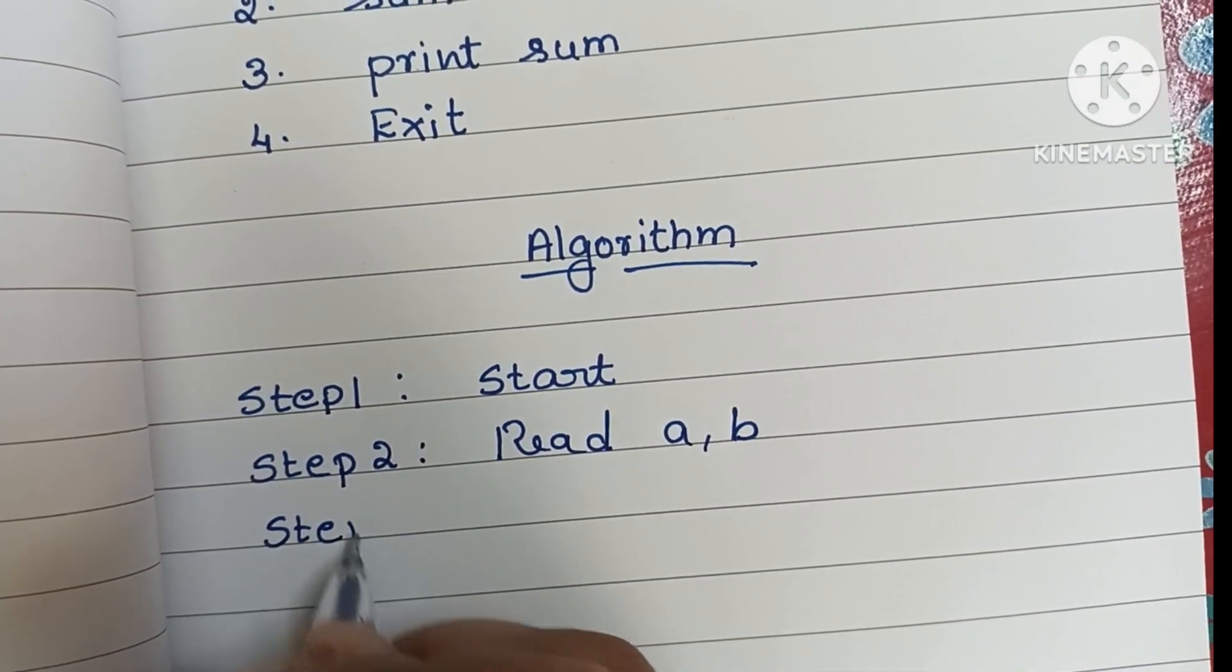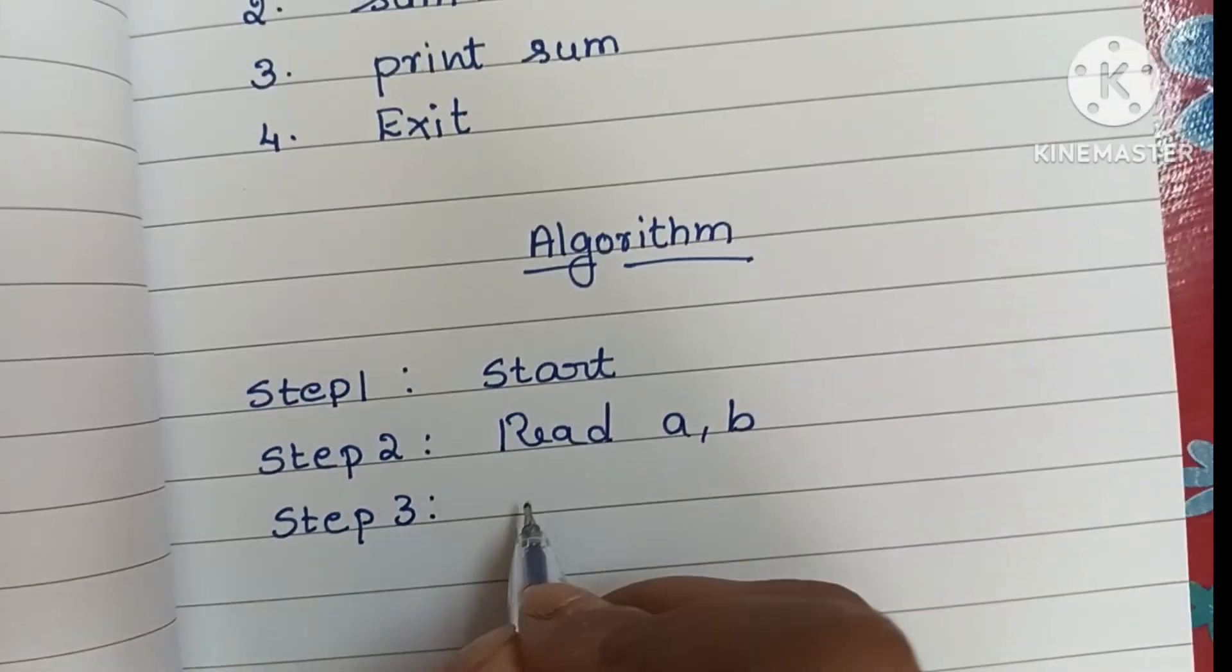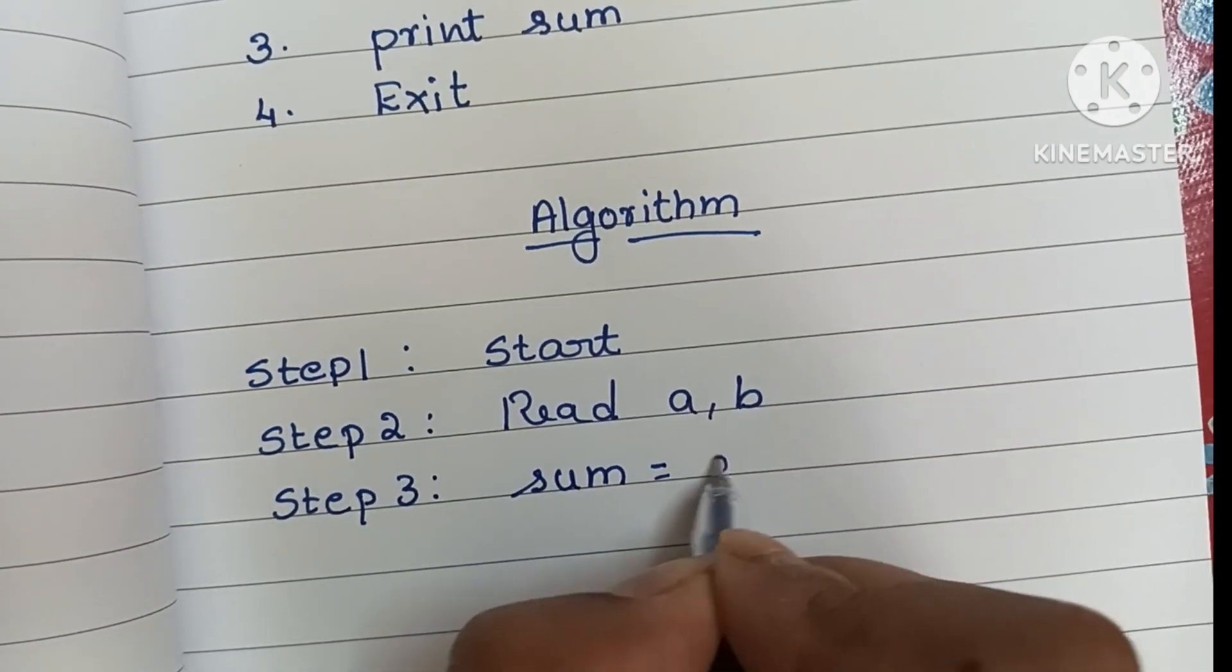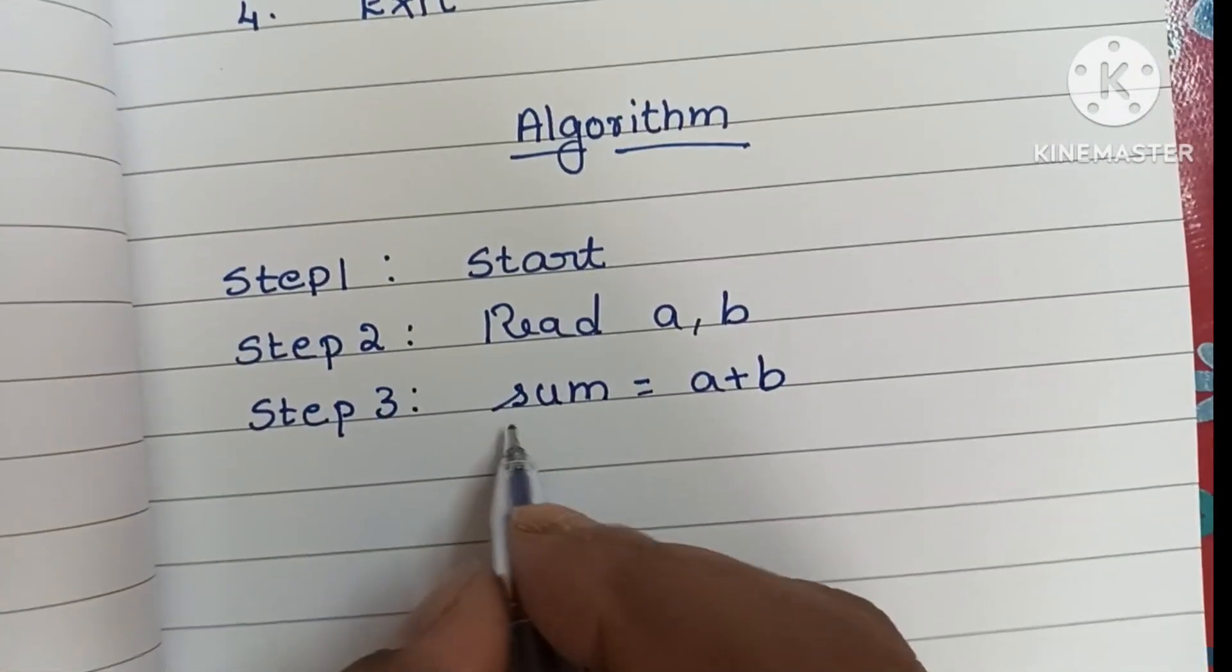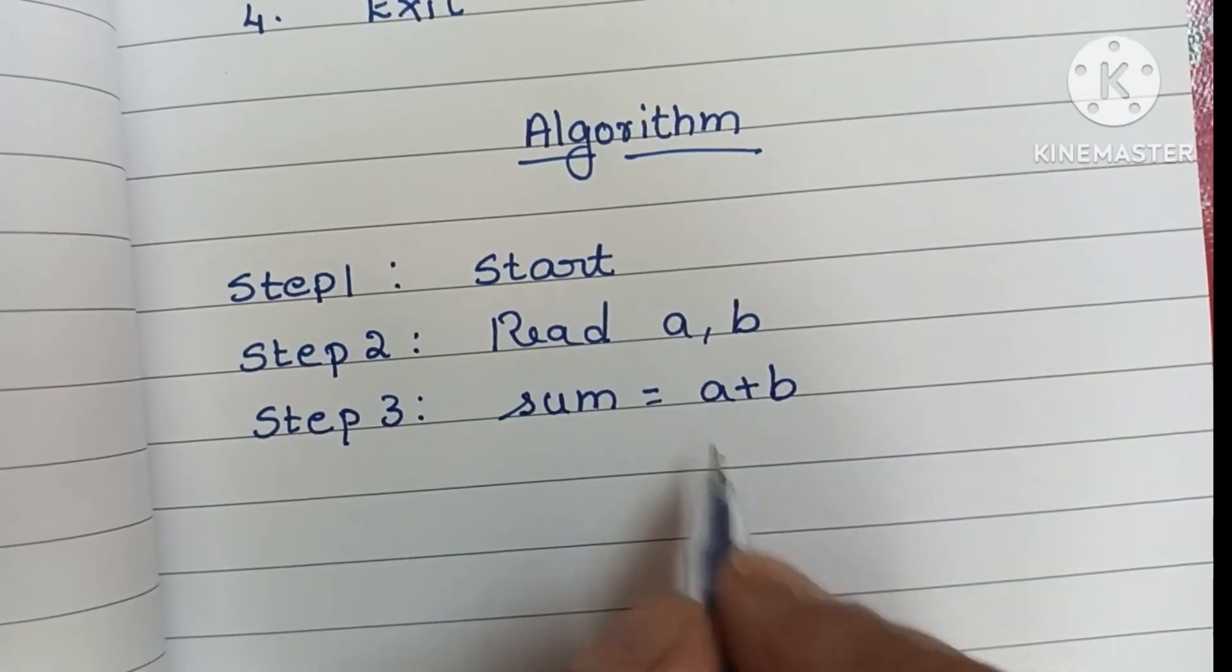Step three: we have to add two numbers, that is sum equals a plus b. Here, variable sum is used to store the addition value.